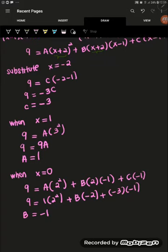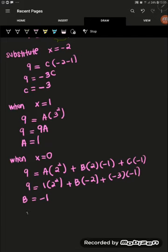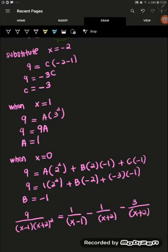We now have all the values of A, B, and C. Writing the partial fractions: 1 over (x minus 1) plus negative 1 over (x plus 2) plus negative 3 over (x plus 2) squared. This is our final answer.